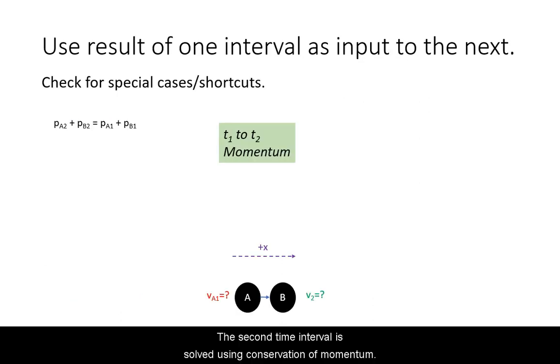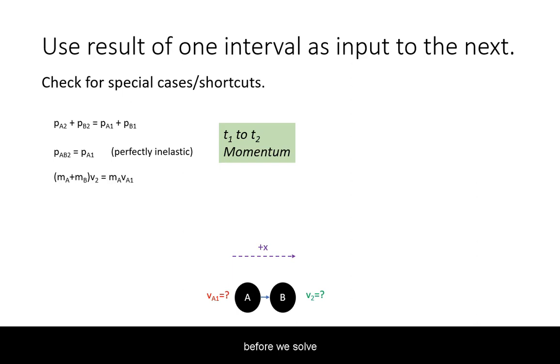The second time interval is solved using conservation of momentum. Again, we look for simplifications as well as special case shortcuts before we solve for the unknown, then plug in.